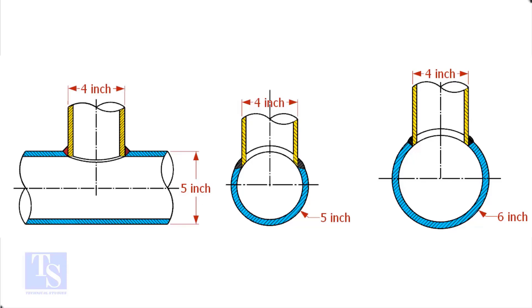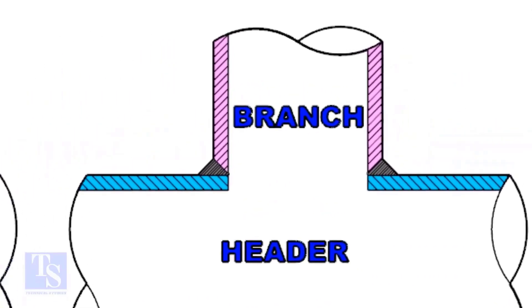Now let us check the stub on connection. In a stub on joint, the branch pipe sits on top of the header pipe. The branch pipe is given cutback cutting and the bevel is also prepared.